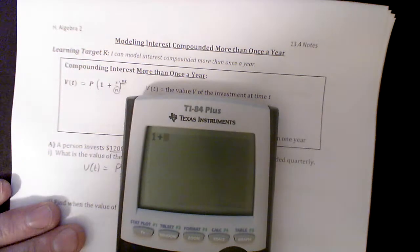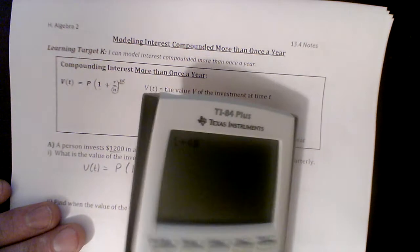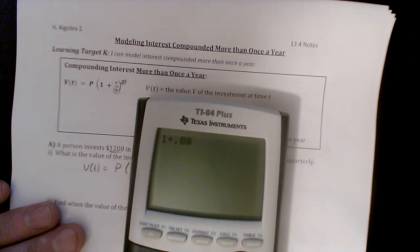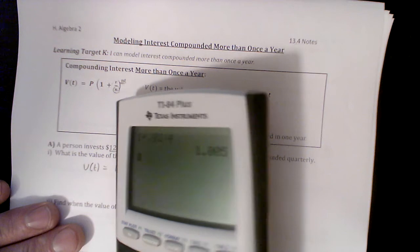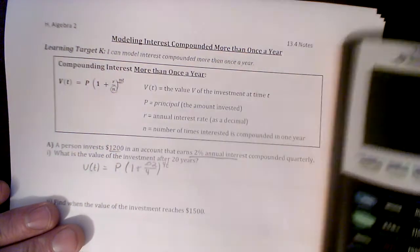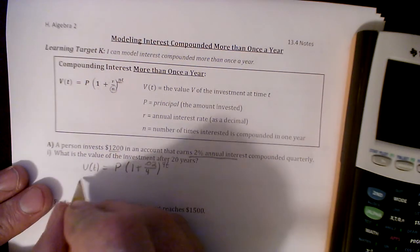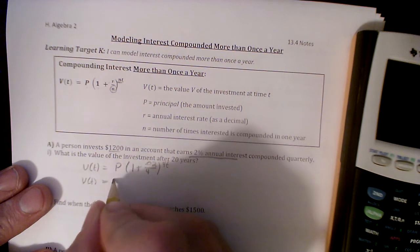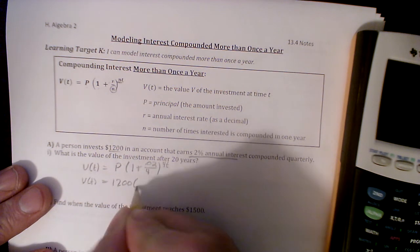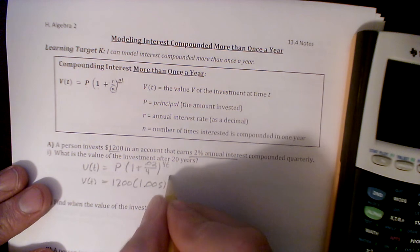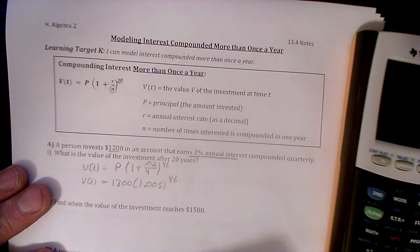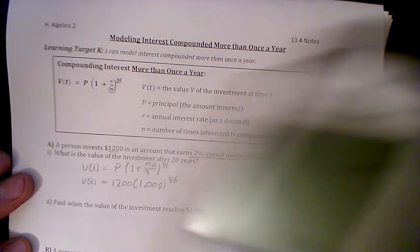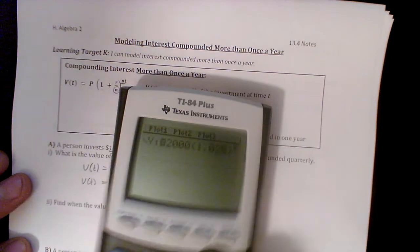We can simplify this. So here, let's do it right here. We're going to say 1 plus 0.02 divided by 4 and we get 1.0005. So if I plug all this in, V(t) equals 1200 times 1.0005 to the 4t power. There's my equation. So we plug in 20.